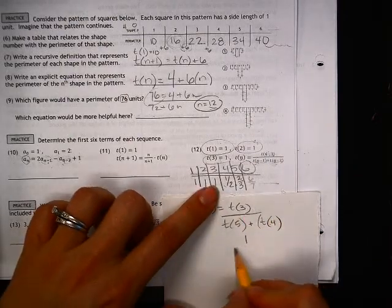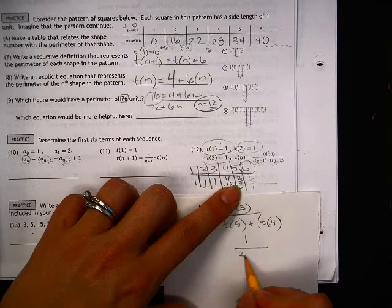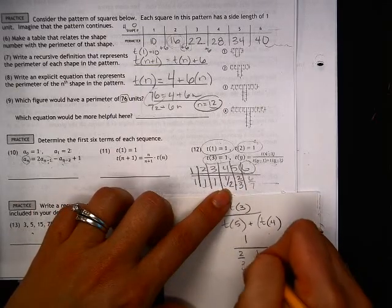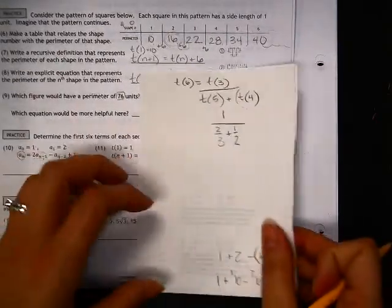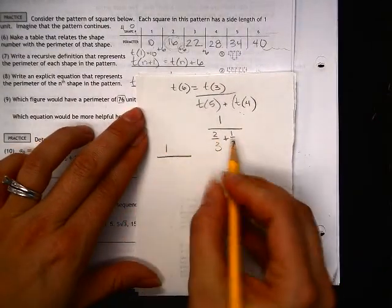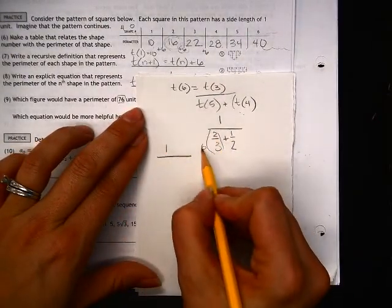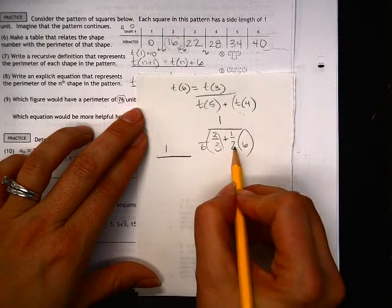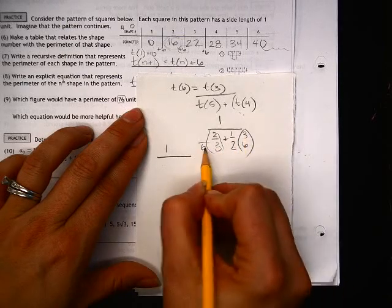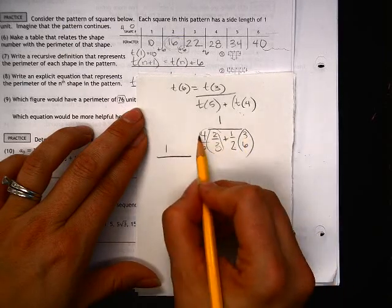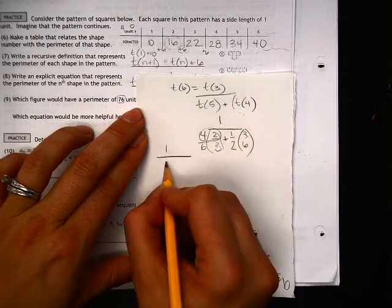T of 3 is 1, T of 5 is 2 thirds, and T of 4 is 1 half. So it's messy. I do need a common denominator. So that would be what times 3, that would be what times 2. So that is 8 plus 3 is 11.